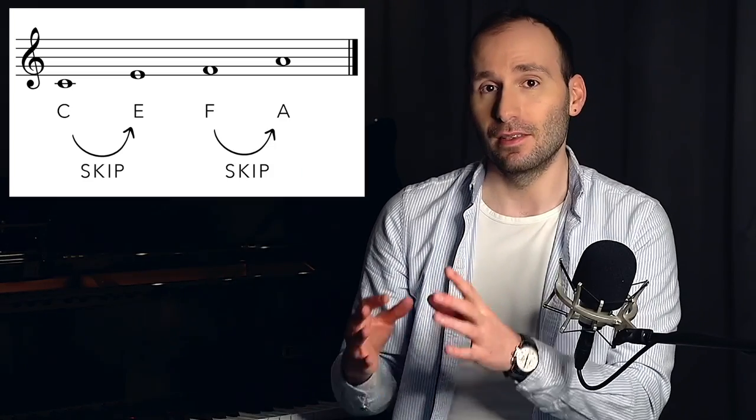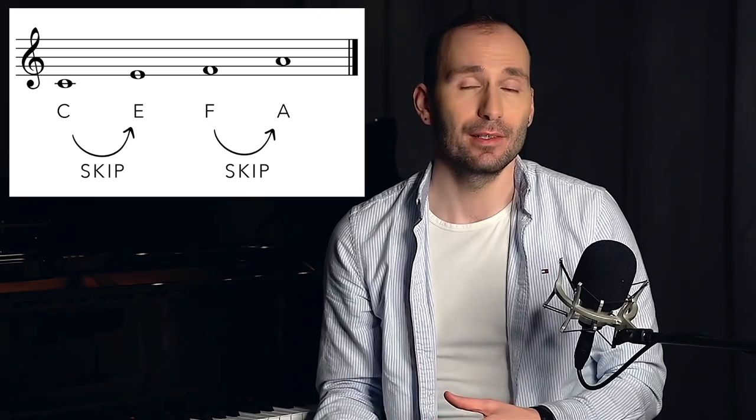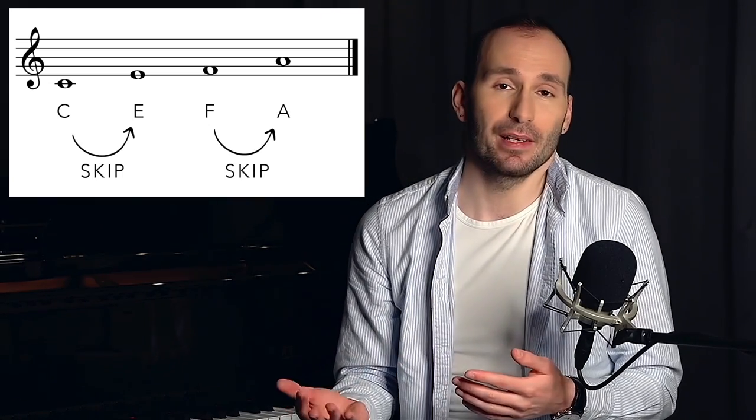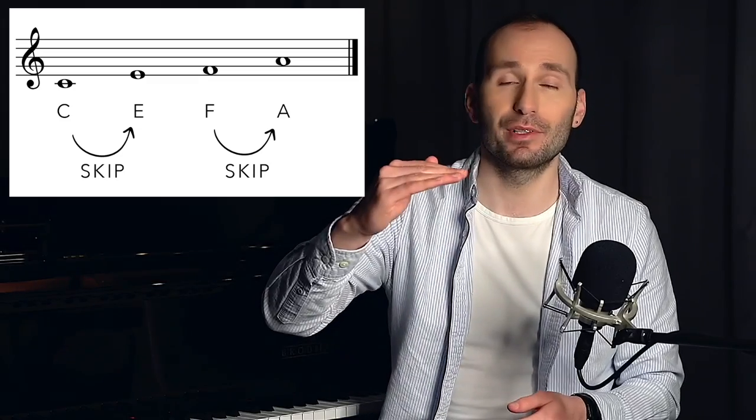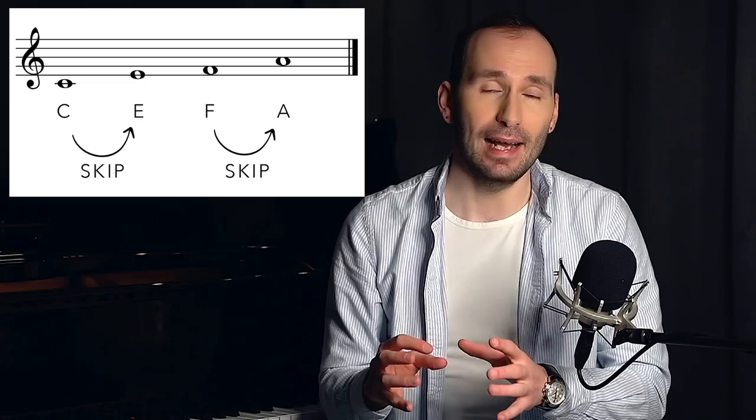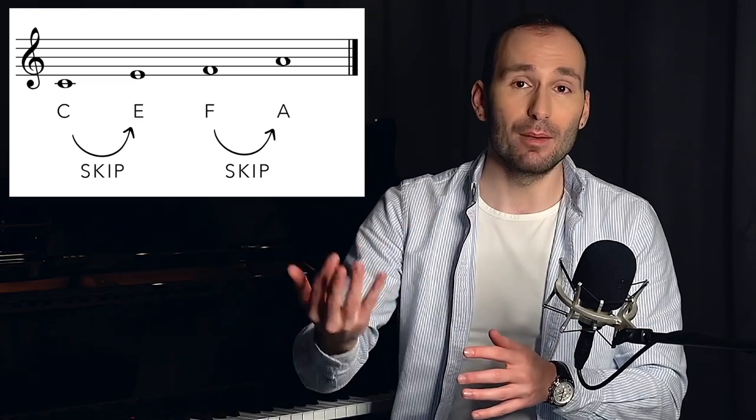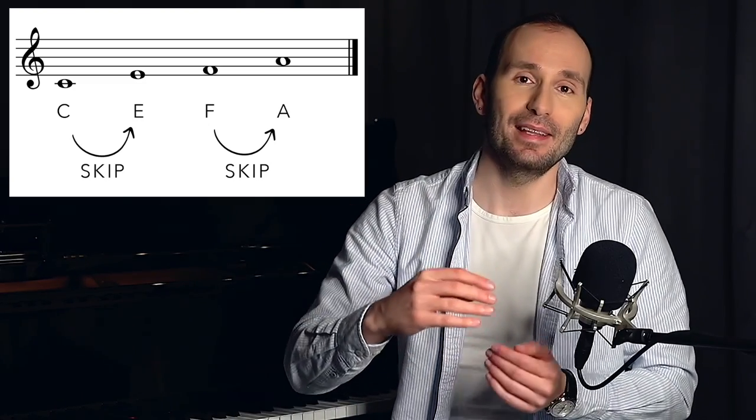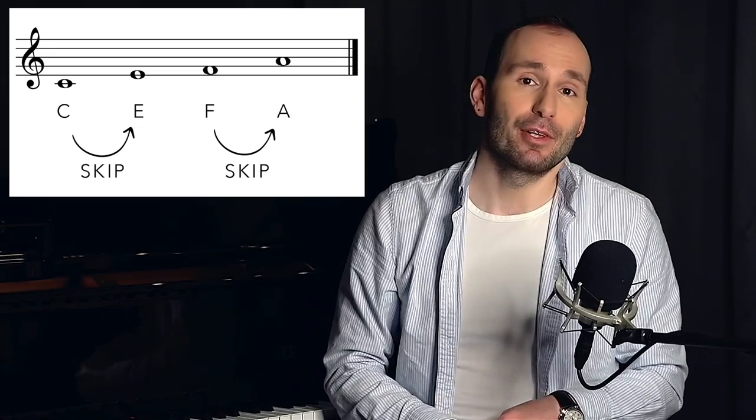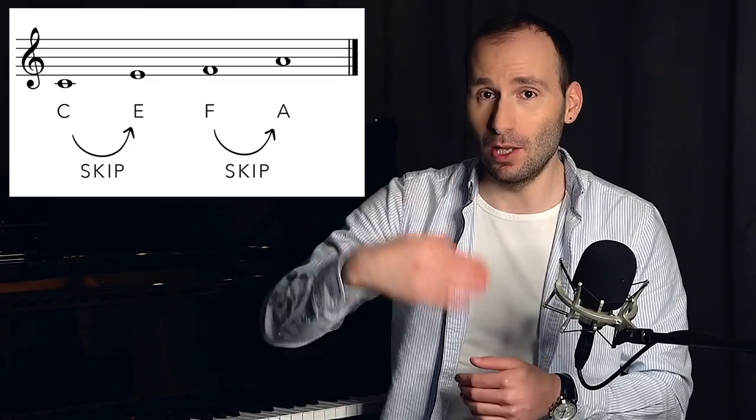Now, if you look at the staff notation, then you can see that a skip is much easier sometimes to recognize because it goes from line to line or it goes from space to the next space. If a note is on any of the lines and the next note is a line up or a line down, you can say that you have to go a skip up or a skip down. And if a note is in the space and the next note again is a space higher or one space lower, you're going a skip down or a skip up.